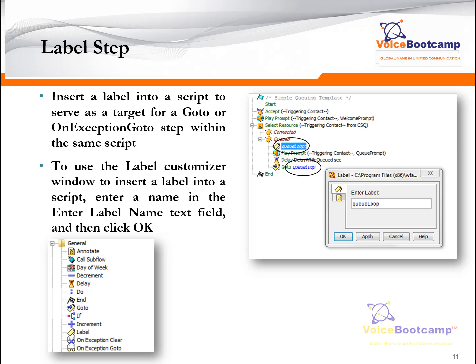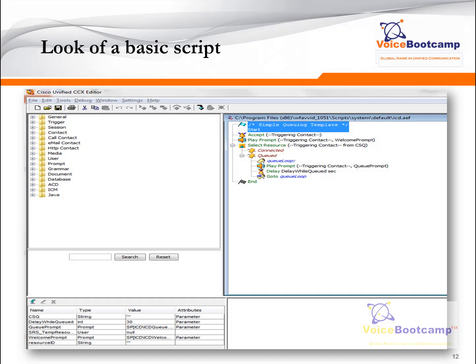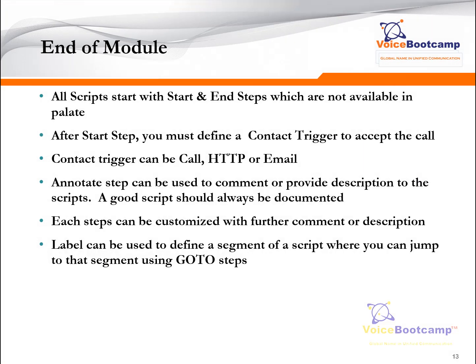This is what a basic script will look like. It will have a Start step, followed by an Accept step which triggers the contact, then maybe a Play Prompt step to announce a welcome message — for example, 'Welcome to Voice Bootcamp' or 'Welcome to AT&T.' Every contact center application has some sort of welcome message. This is what a final basic script will look like at the end of the day.